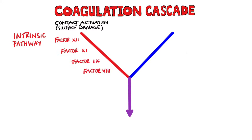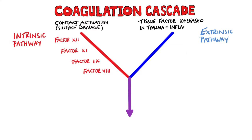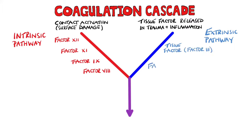The extrinsic pathway is shown here in blue, and it results from trauma or inflammation that leads to tissue factor release. Remember that tissue factor is also known as factor 3. Tissue factor and activated factor 7 form a complex together that can then activate factor 10.